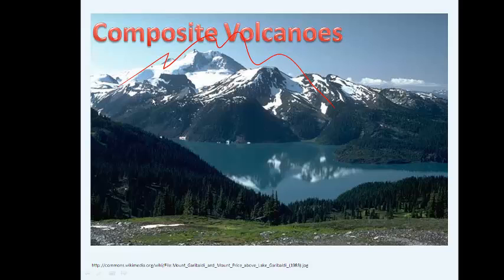Composite volcanoes are formed by thick magma. Trapped gas builds up pressure in this thick, gooey mess, and when the gas is finally released, it's very explosive. You get very explosive volcanic eruptions — if you've read anything about Mount St. Helens, you'll know that it was a very explosive eruption that blew the top right off the mountain. These volcanoes form near subduction zones, which explains why we have them in our area.